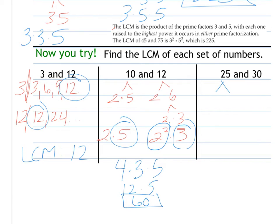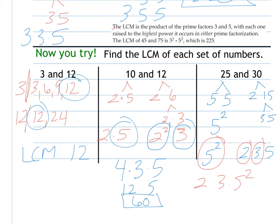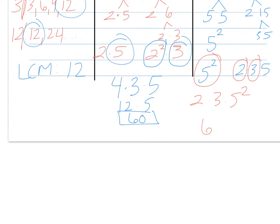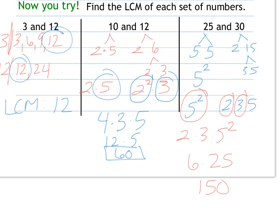Next one, 25 is 5 and 5, or 5 squared. 30 is 2 and 15, which is 3 and 5. So we have 5 squared and 2 times 3 times 5. Since they both have 5, but this one is the highest power, I'm doing 2 times 3 times 5 squared, which is 6 times 25, which is 150. So the least common multiple here of 25 and 30 is 150, the smallest number they both multiply to.